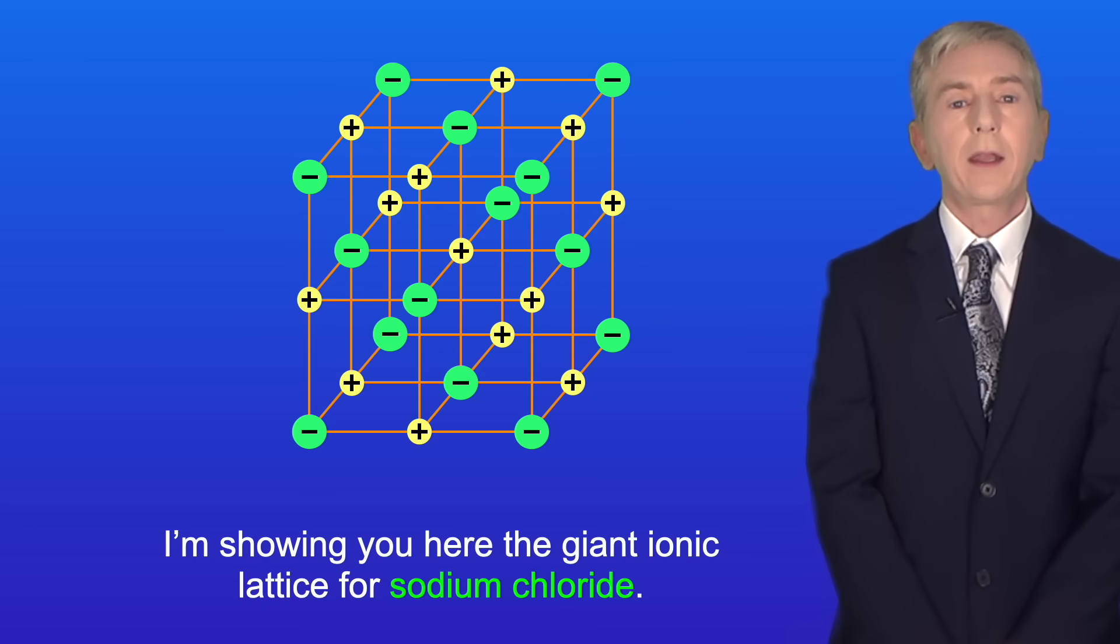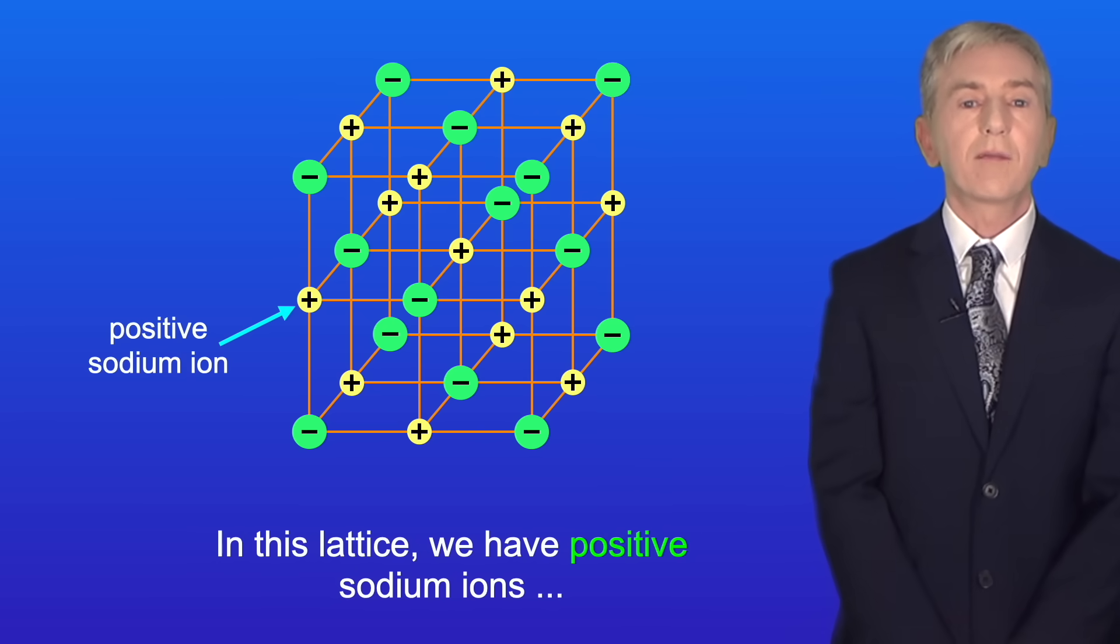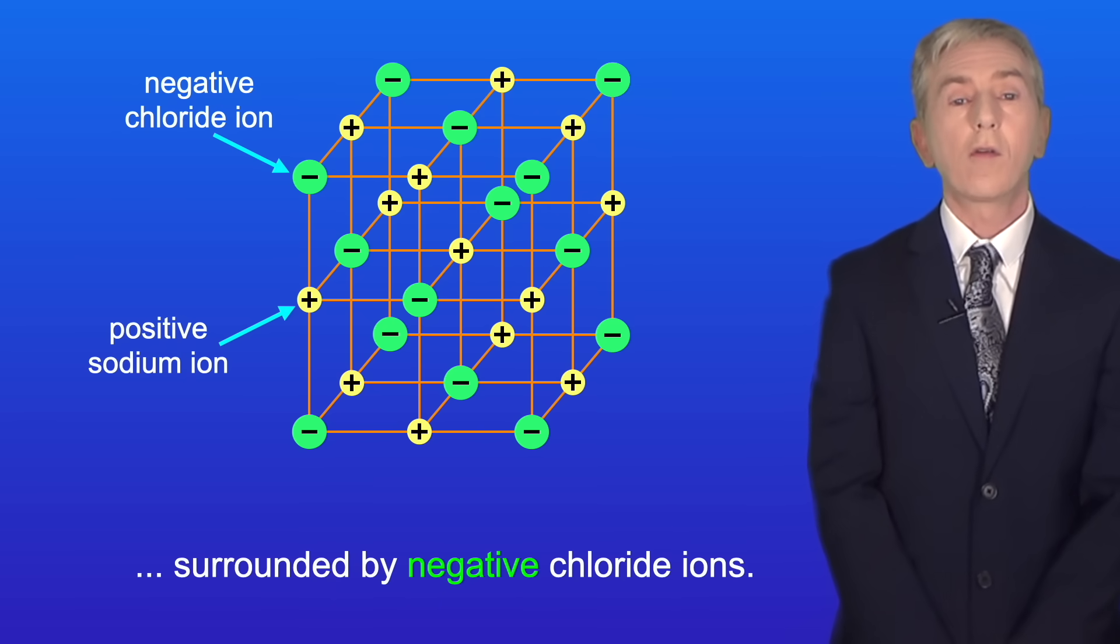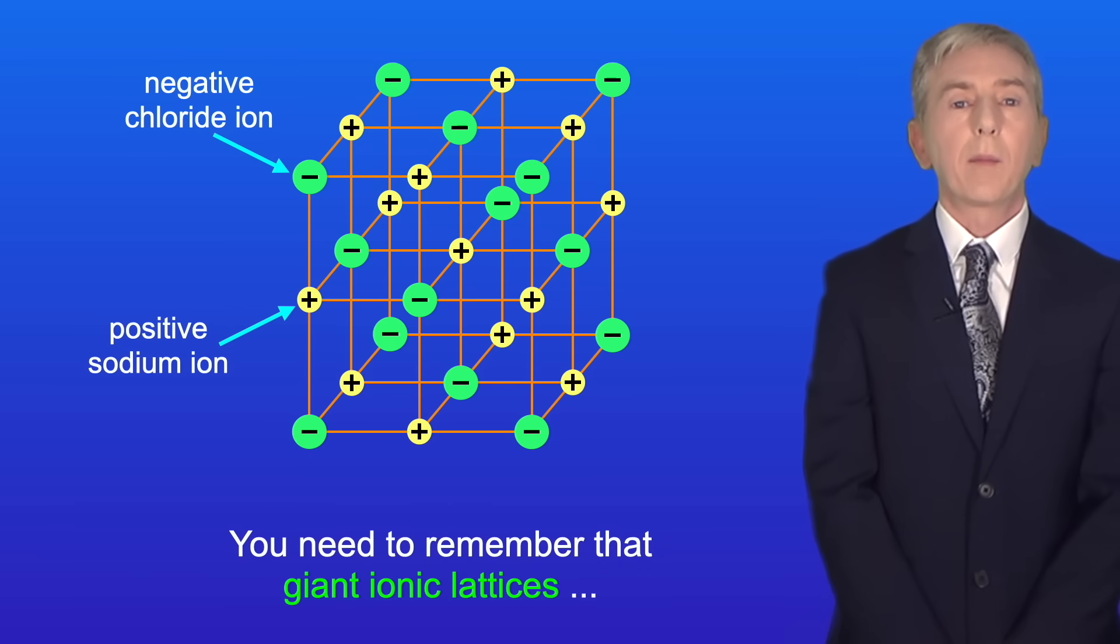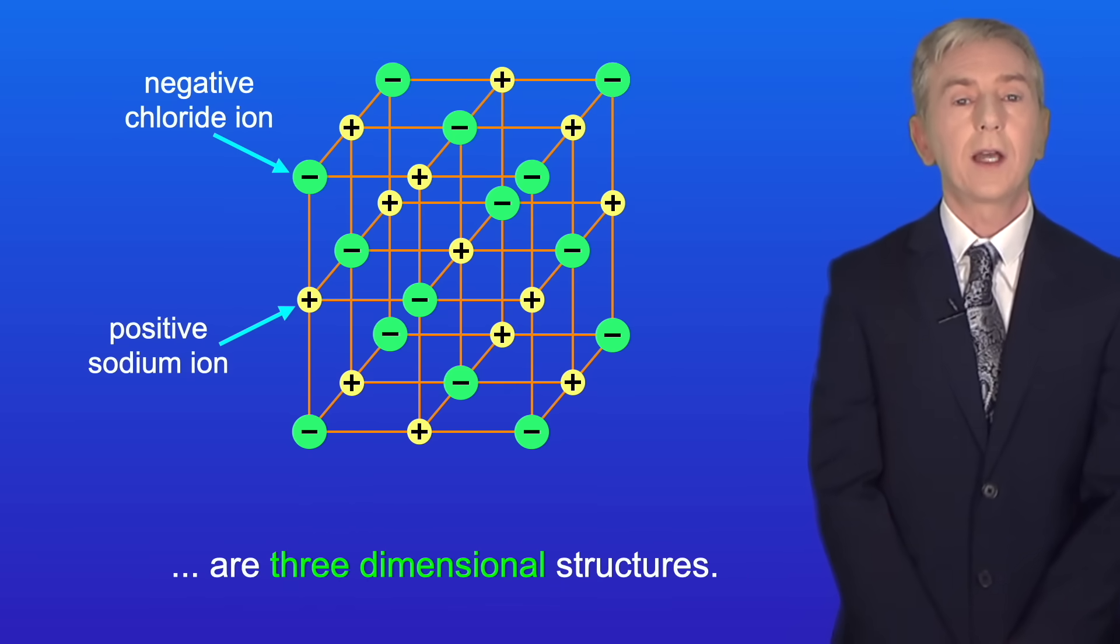I'm showing you here the giant ionic lattice for sodium chloride. In this lattice, we have positive sodium ions surrounded by negative chloride ions, and you need to remember that giant ionic lattices are three-dimensional structures.